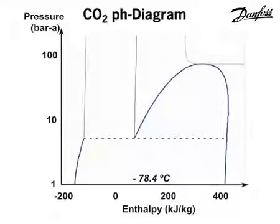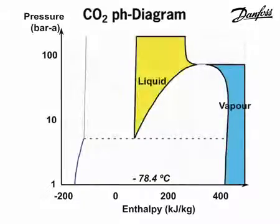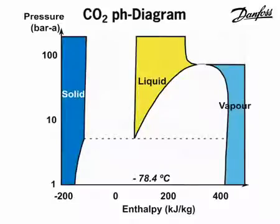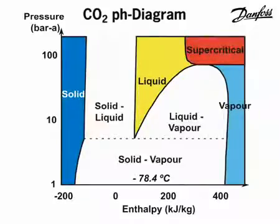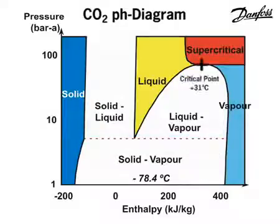For CO2 applications, this diagram has to be extended so that the solid and supercritical phases are included. The coloured areas indicate the different phases of CO2, namely vapor, liquid, solid and supercritical. The triple point is here and the critical point is here.